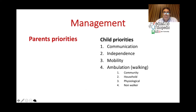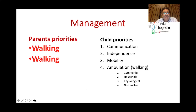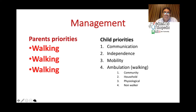To manage the CP child, we should know the priorities. Most parents ask for walking as the top priority. However, what the child truly needs is first to communicate well in the community, second to be independent in daily activities, third to be mobile — whether with a wheelchair or walker — and lastly to be an ambulator. We should always convince parents that communication, independence, and mobility are more important than walking.